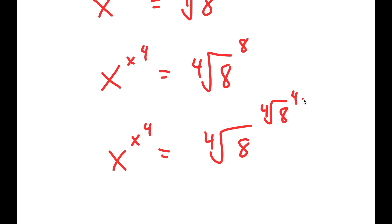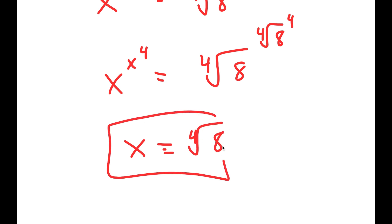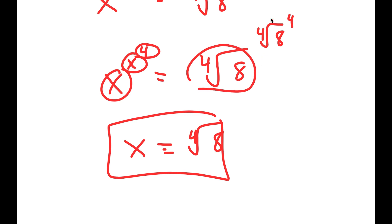Because the 4th root of 8 to the power of 4 is just 8, this means that x is equal to the 4th root of 8 — since the expression is in the form x to the power of x to the power of 4, x in this case is the 4th root of 8.